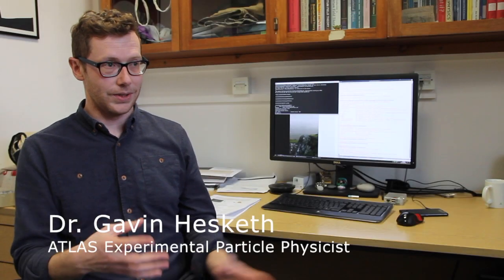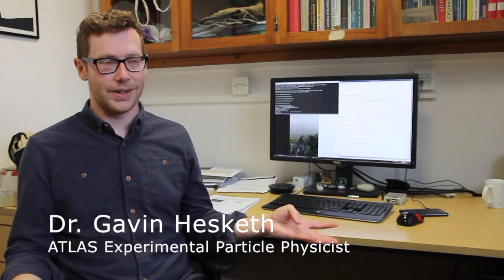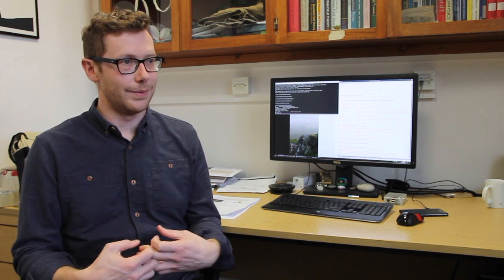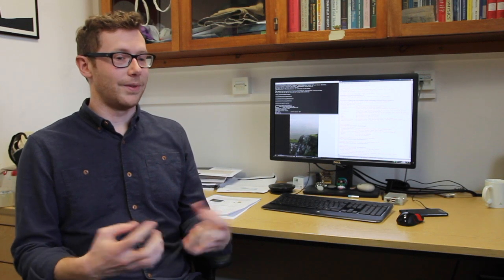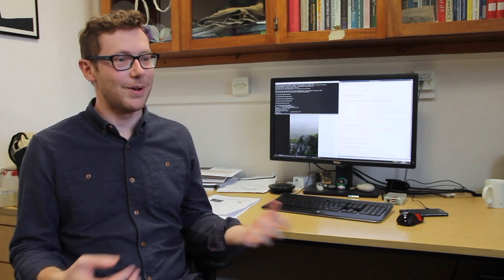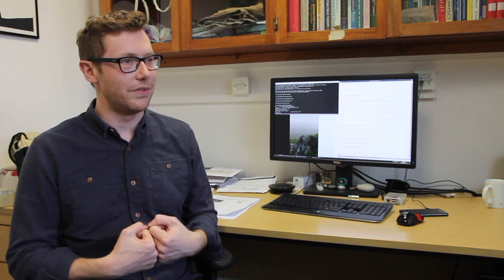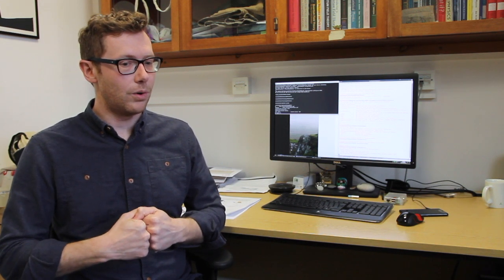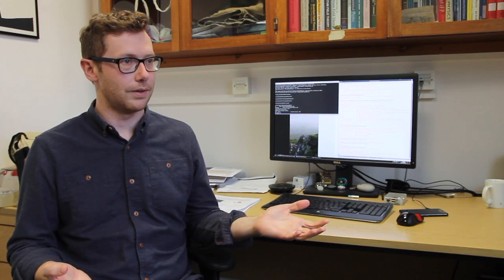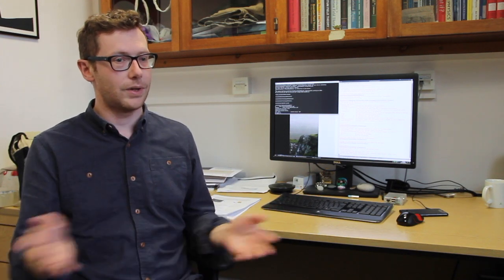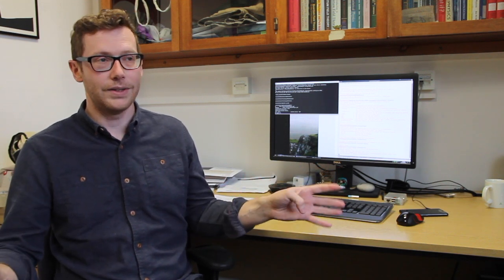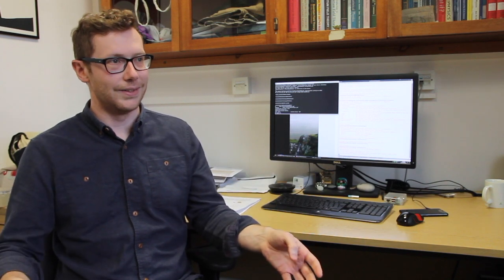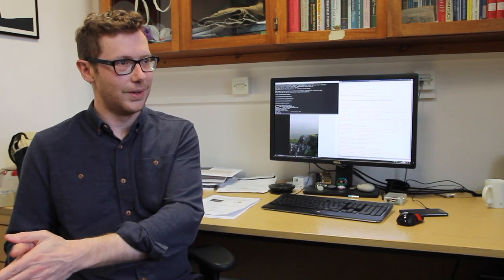The LHC when it's running, which is usually six to nine months out of the year, can be colliding protons at a rate of 40 million times every second. That's a lot of data already. Most of those collisions are not very interesting, so most of them we throw away straight away, and we record about 1,000 collisions every second. But that means over the course of a year, the LHC is producing really billions and billions of collisions, and we're trying to filter that down to hundreds of millions that we can then go and sort through offline.